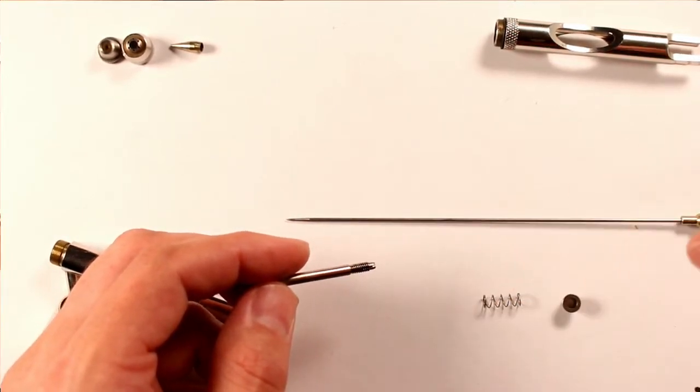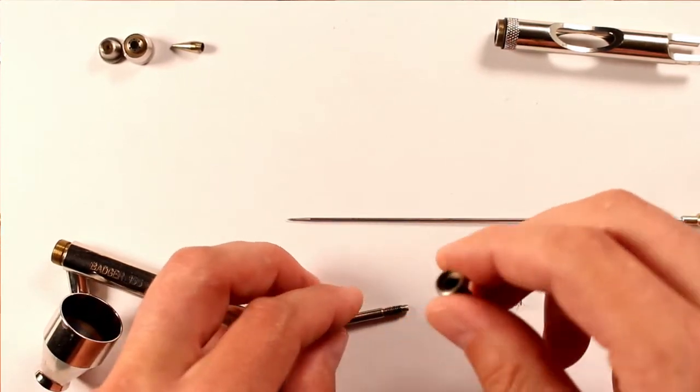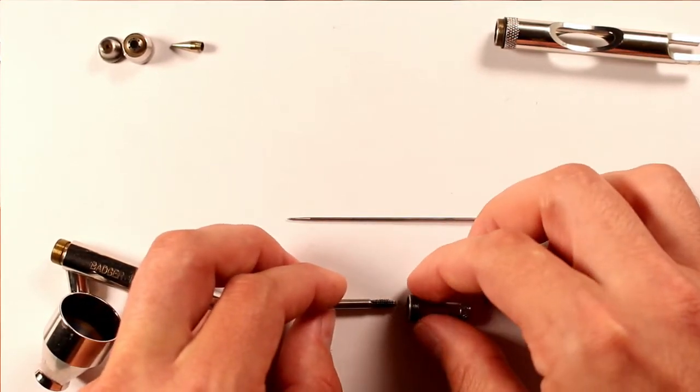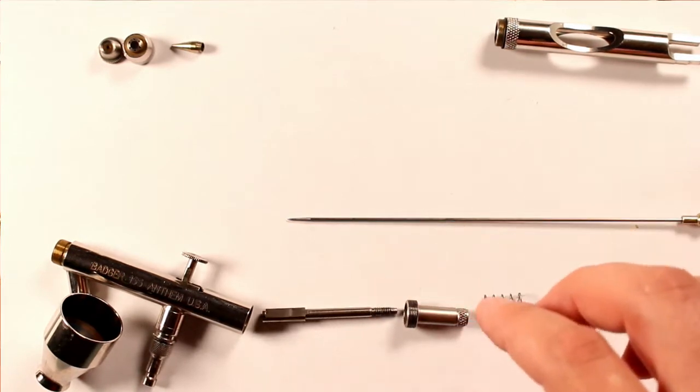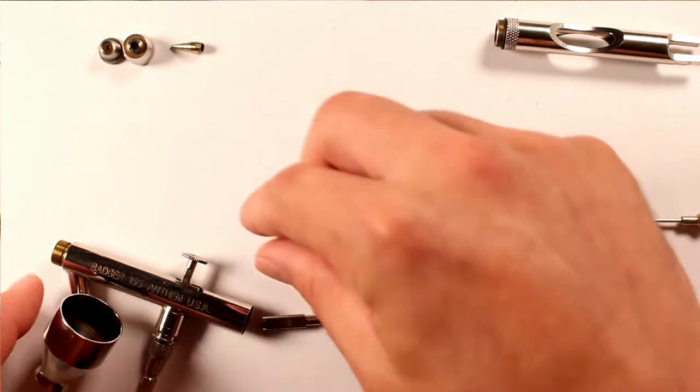And then coming out, the needle will fall out if there's not gunk all over it. And then I'm just going to set this down here. And then this is going to be your needle spring or your needle tube spring.